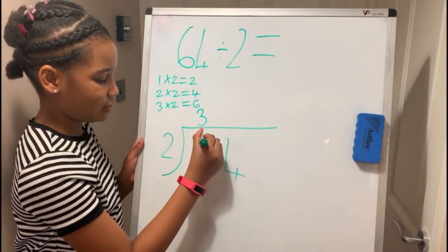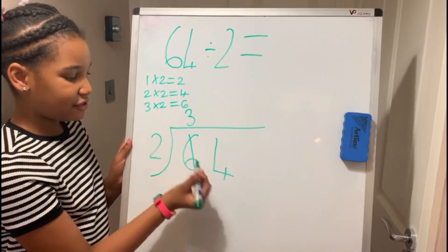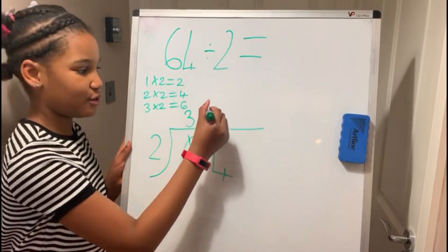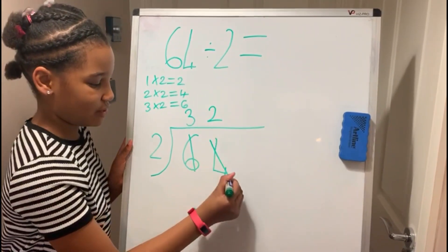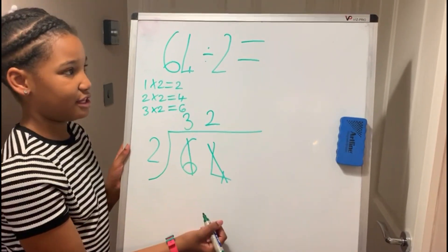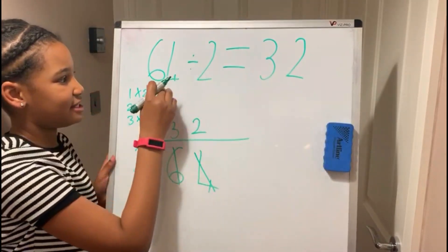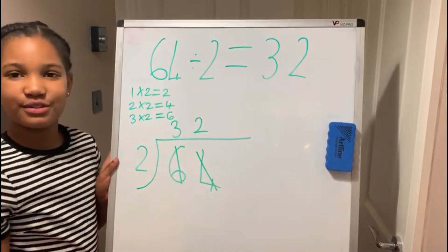And to make it easier just cross out the 6. How many 2's go into 4? You've already got your answer up here: 2 times 2 equals 4, so it's 2. And cross out the 4. So there's your answer, 32. You write the 32 where you've written your question. 64 divided by 2 equals 32.